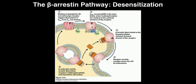What BARK does when it's recruited is it phosphorylates some serine residues on the cytoplasmic domain of the G protein-coupled receptor — you see a couple of phosphates added on serine residues. When that happens, it attracts another protein. BARK goes away, but these phosphates on serines attract the orange protein, beta-arrestin — thus the name beta-arrestin pathway.